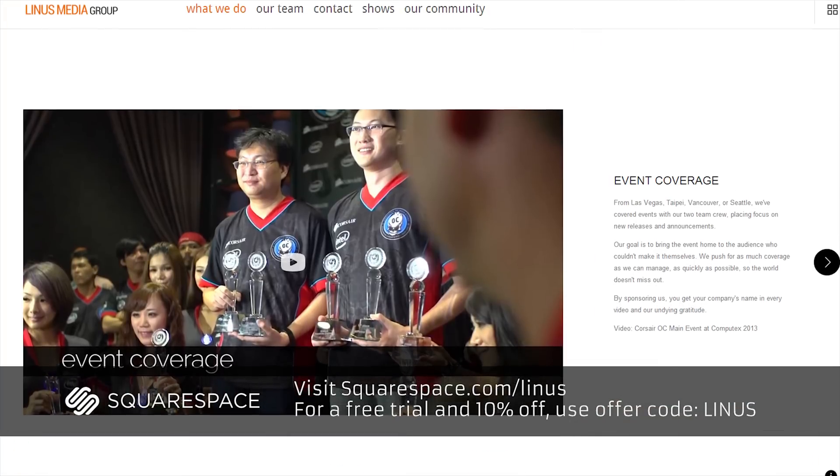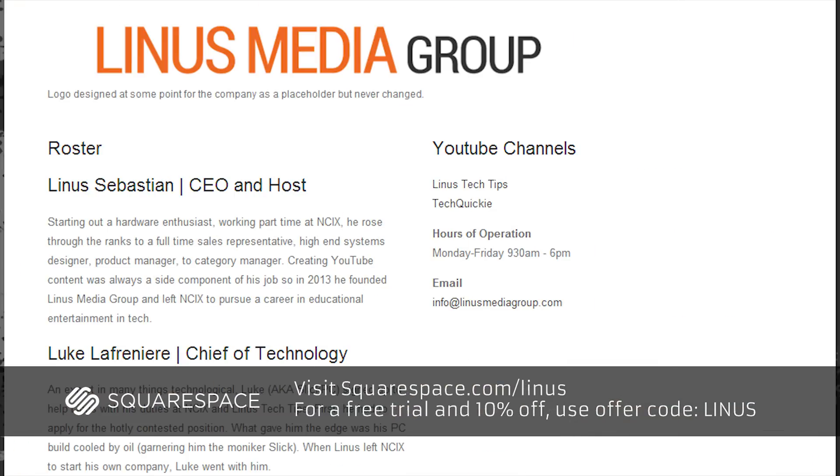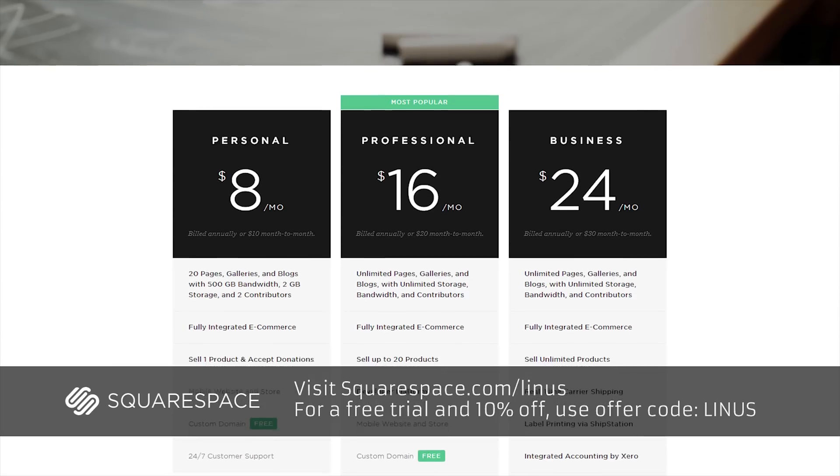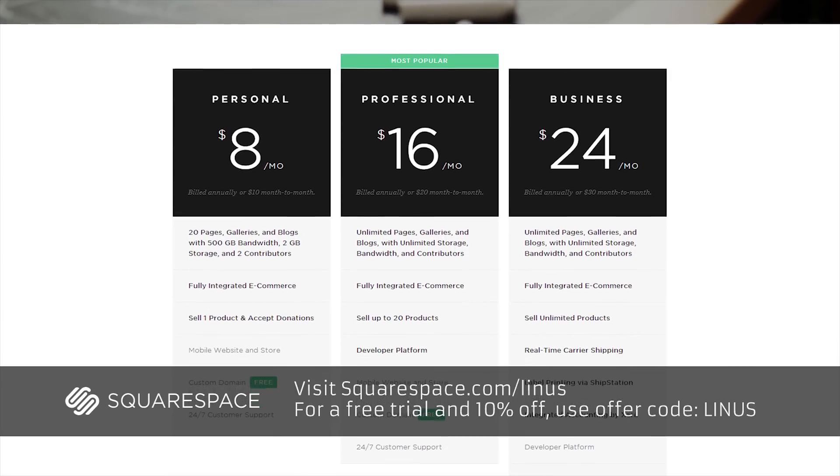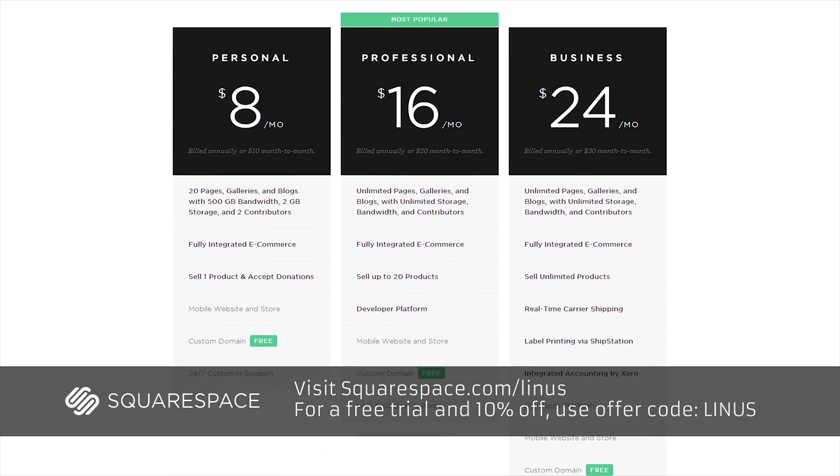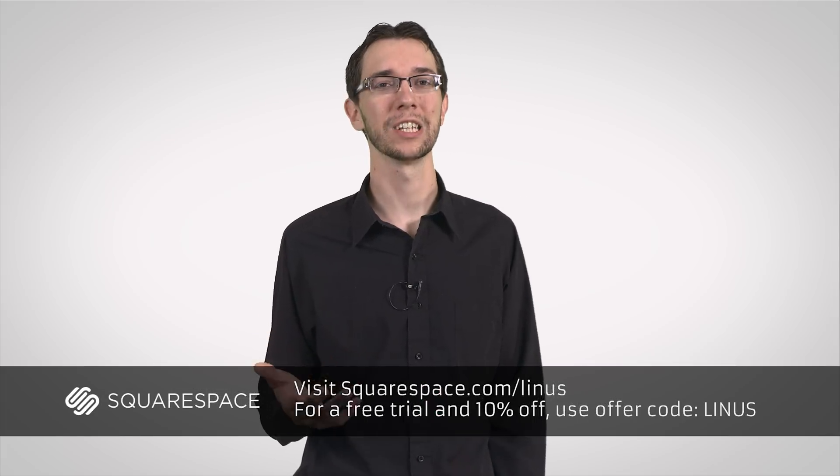In our case, rather than having Luke create the site, our designer Edsel was able to do it with no issues. Plans start at only $8 a month for personal sites, $16 a month for professional sites, and just $24 a month for business sites. So head over to squarespace.com slash Linus to get your free trial today and create your next personal, professional, or business website.